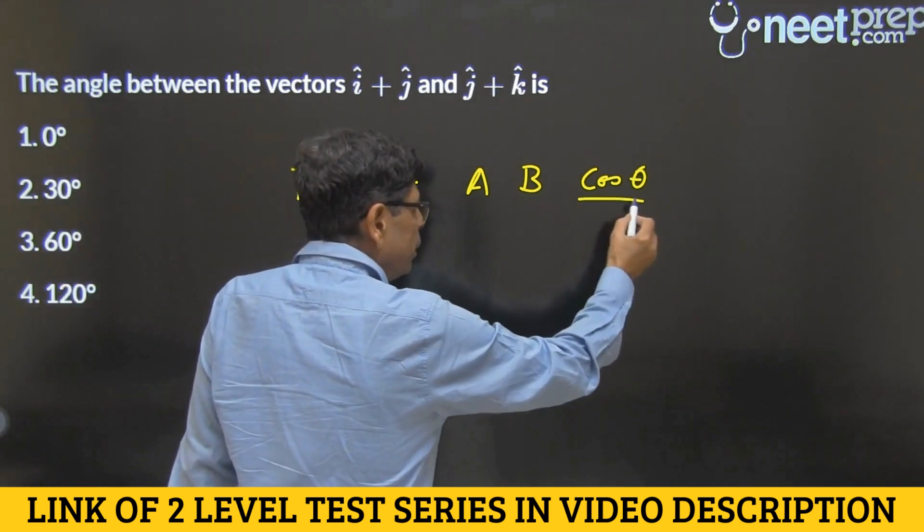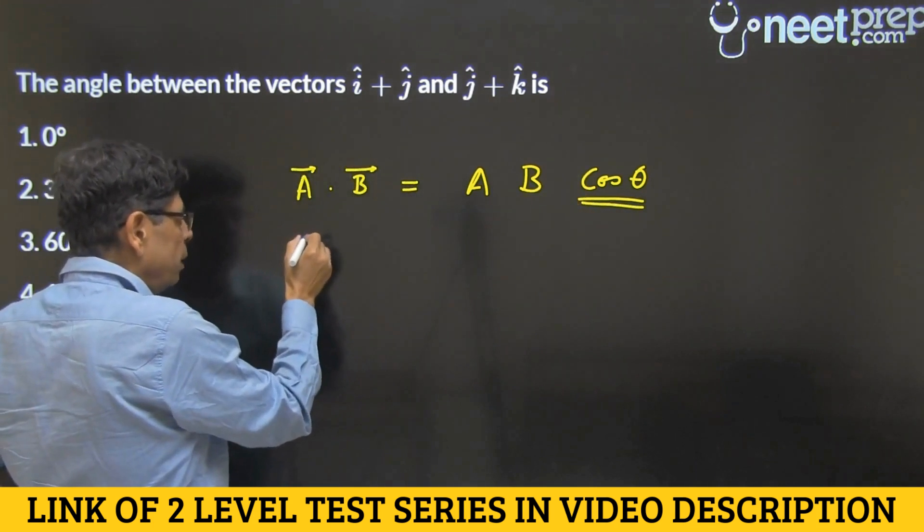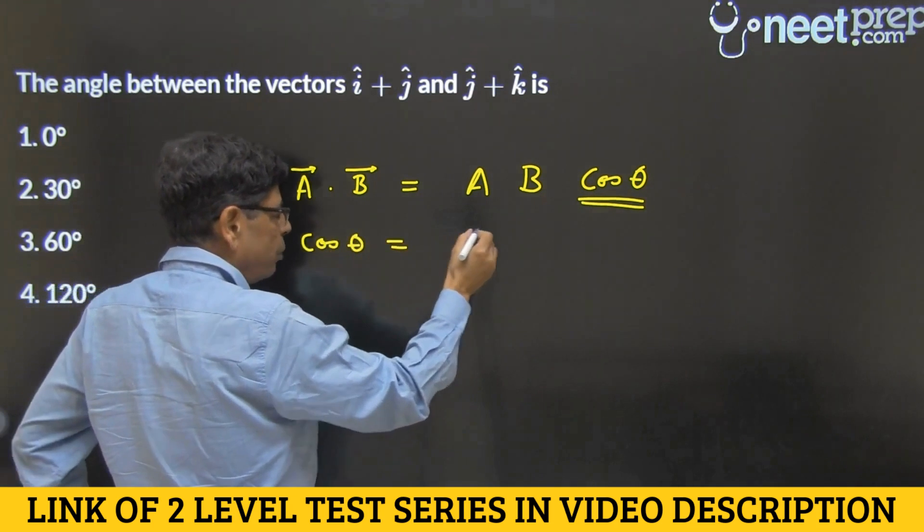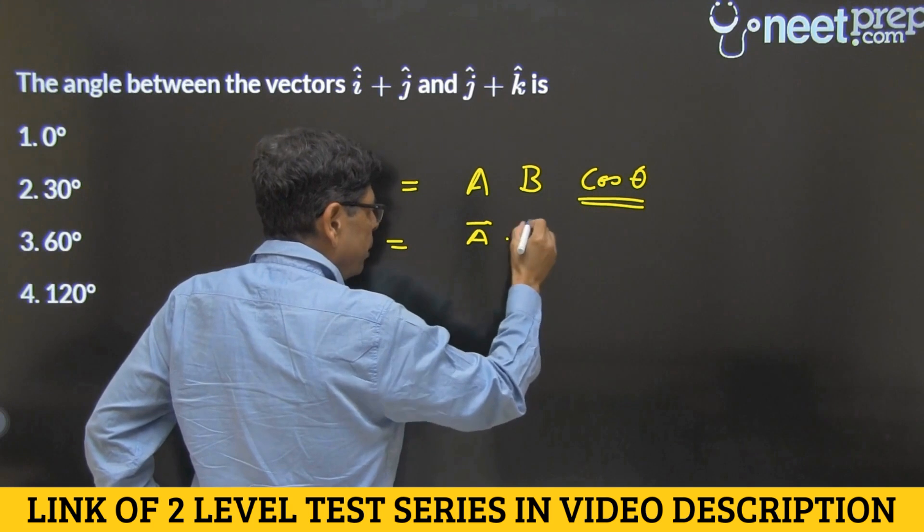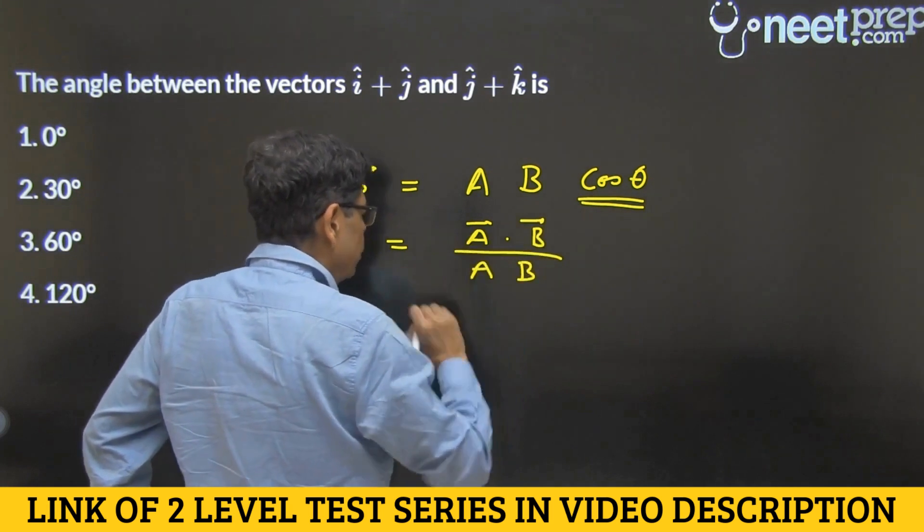To get the angle between the two vectors, we can get the cosine of that angle by doing this operation. Cos theta equals A dot B divided by magnitude of A and also divided by magnitude of B.